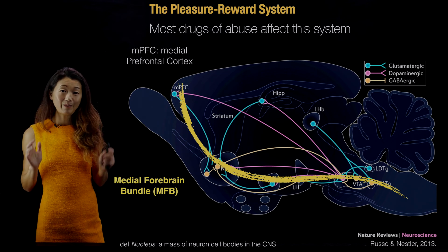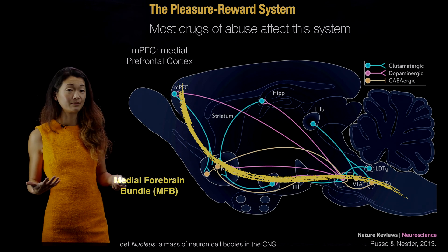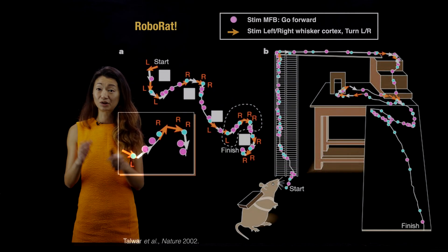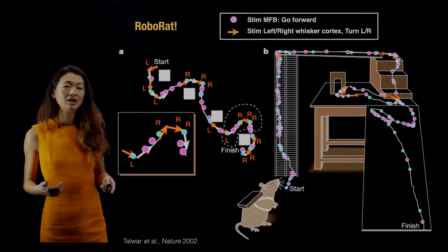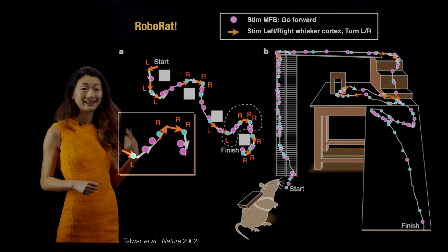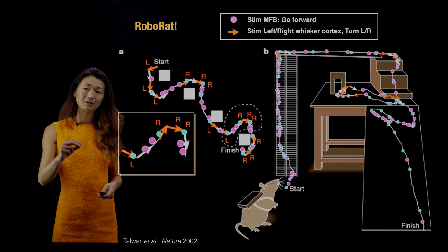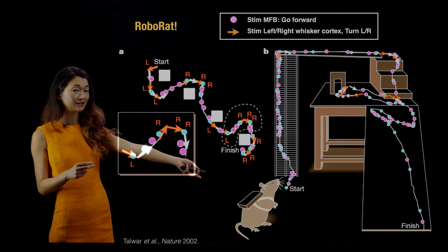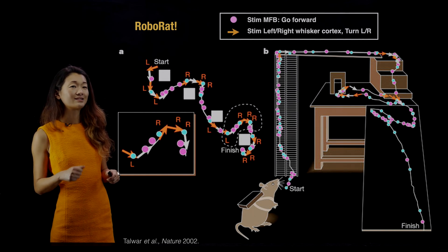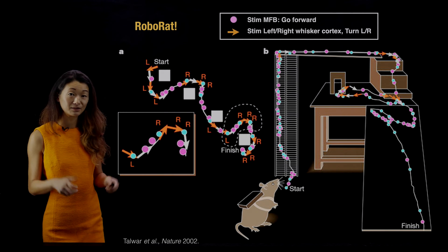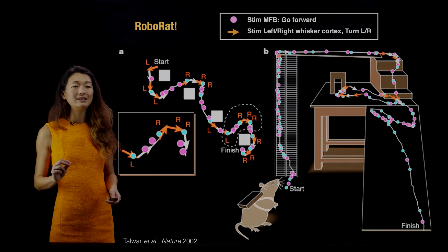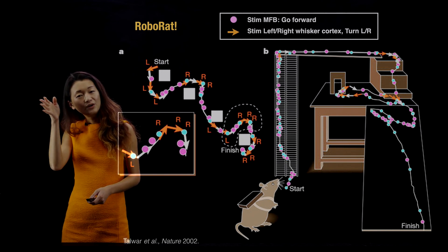To give you an idea of how powerful this system is, if you tapped into the medial forebrain bundle — a nerve bundle that's a bunch of electrically active axons — you can build yourself a robo-rat. In this paper, researchers implanted an electrical device that directly stimulated the medial forebrain bundle of a rat carrying a backpack with a battery attached. When it stimulates the medial forebrain bundle, the rat feels like something good happened and moves forward.